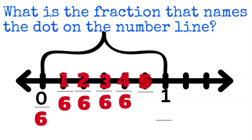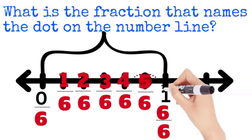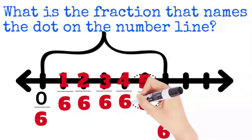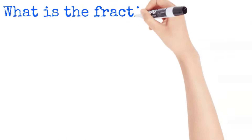So counting: one sixth, two sixths, three sixths, four sixths, five sixths, and six sixths would be my whole. However, the dot is on five sixths. So five sixths is the fraction that names the dot on the number line.